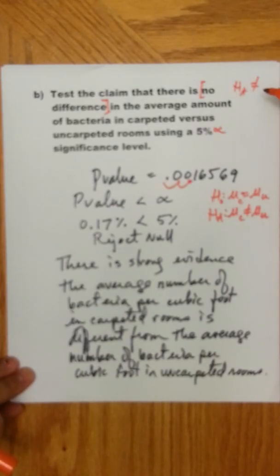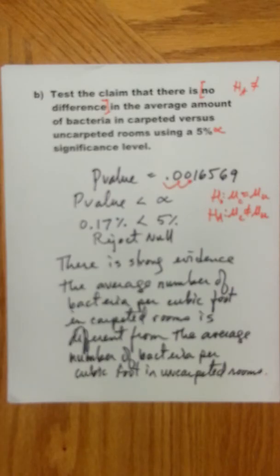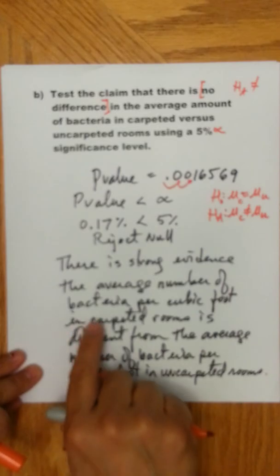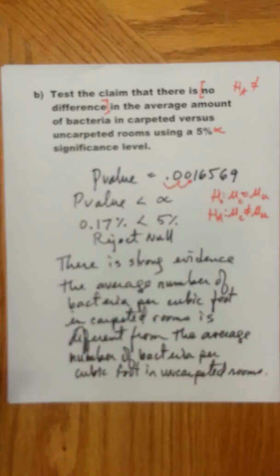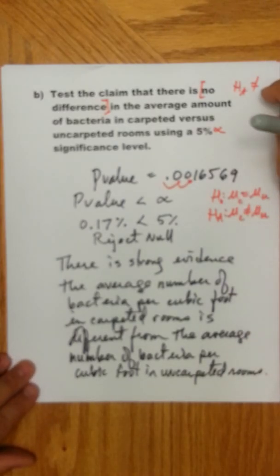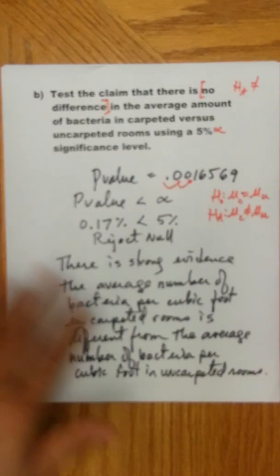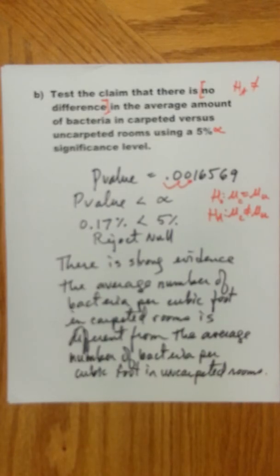Now, if for some reason you had tested 'greater than,' because of the way you put it in the calculator — carpeted first and then uncarpeted — you would know that carpeted would be greater than uncarpeted, if that's how you set it up. So the order in which you put it in the calculator and what you select there is going to tell you how to write your sentence. Thanks so much for listening.